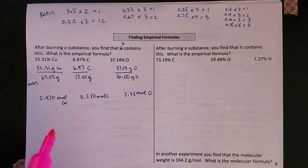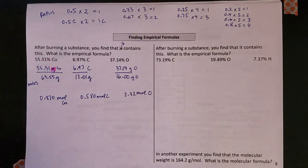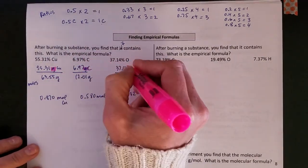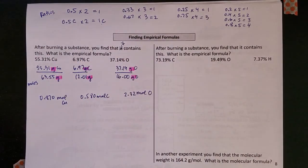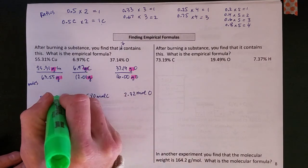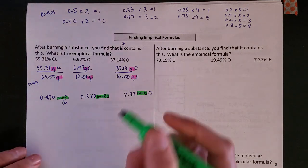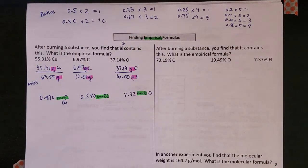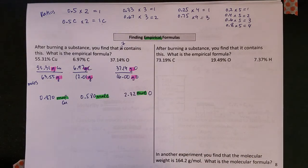And so what I just did here is I went from masses that were given up on top here, each of those masses I used a molar mass and I've converted each of those into moles. Moles are good because remember our empirical formulas are mole proportions, mole ratios between the different elements.